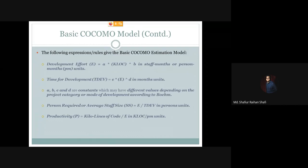Let's recap the rules: Development effort E = a × KLOC^b, and its unit is person months. Time for development TDEV = c × E^d, where c and d are constants, E is the development effort, and the unit is months. Then average staff size SS = effort divided by time for development, unit is persons. And productivity = KLOC divided by effort, unit is KLOC per PM.